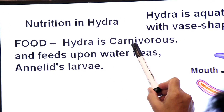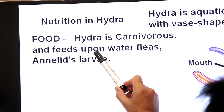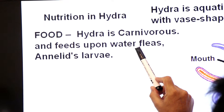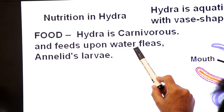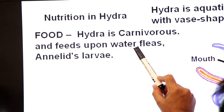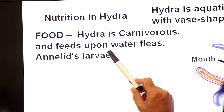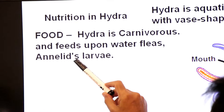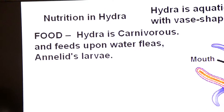Hydra is a carnivore — a meat eater. It feeds upon water fleas, which are aquatic crustaceans, and also feeds on annelid larvae.